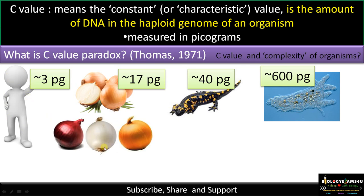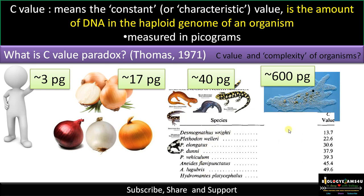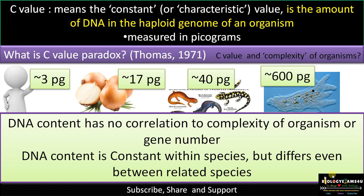At the same time, C value is very much different between related species. In the case of onion, it ranges between 15 to 30 picograms. In the case of salamander, research data shows that across seven species, the C value ranges from 13 to 50 picograms. So there is no correlation between DNA content and the complexity or gene number of an organism, yet DNA content differs greatly even between related species.